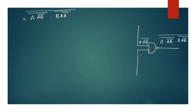A, B complement is here. What is B? A, B complement is here. This is a product term — A, B complement. The A B complement multiplied by A B complement gives us the required expression.